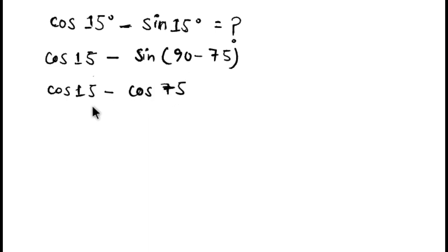Now it is cos A minus cos B. It is in the form of cos A minus cos B. And we know cos A minus cos B expansion is -2 sin((A+B)/2) times sin((A-B)/2).